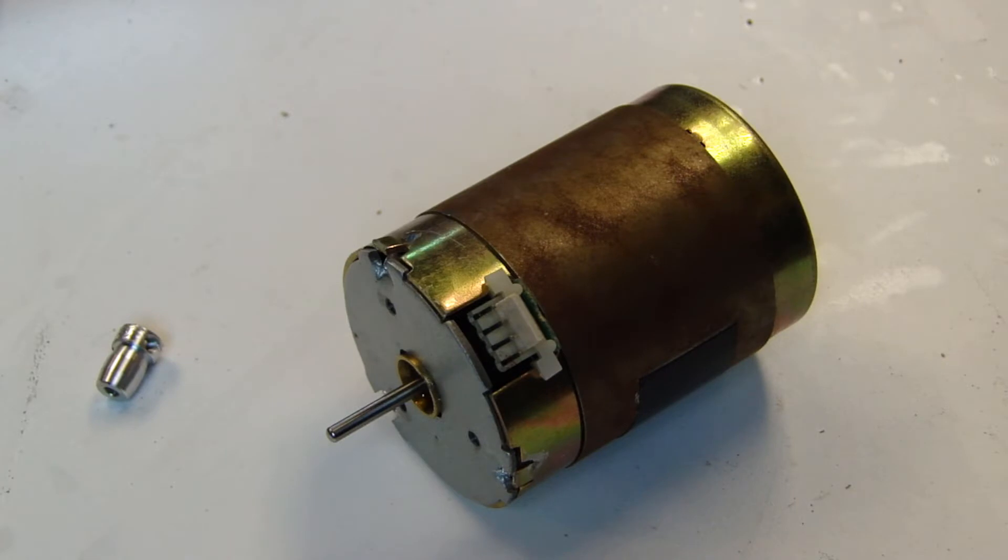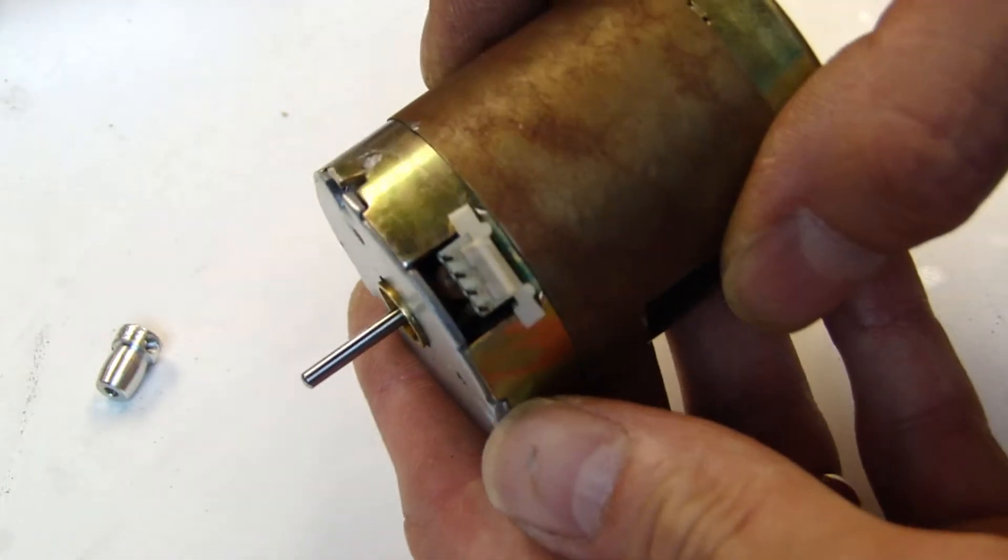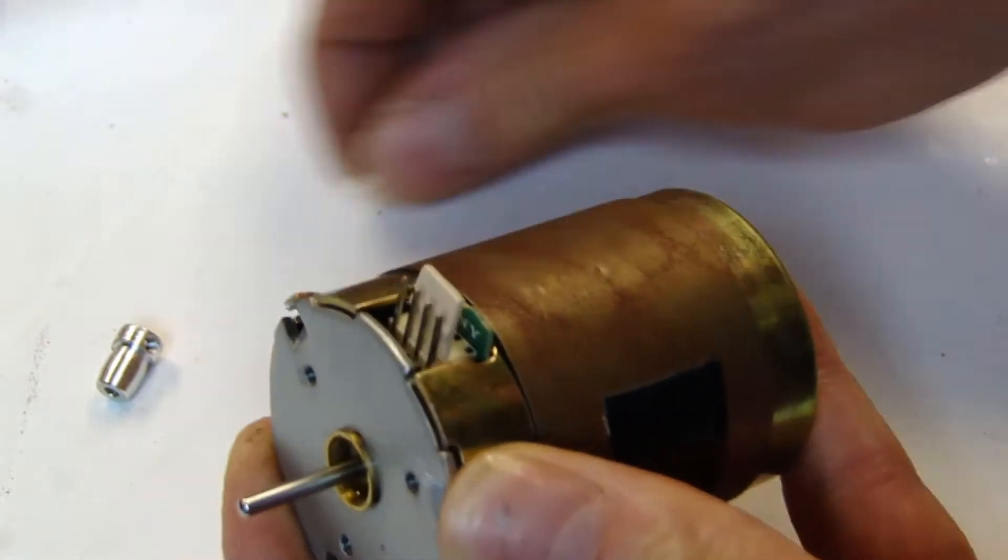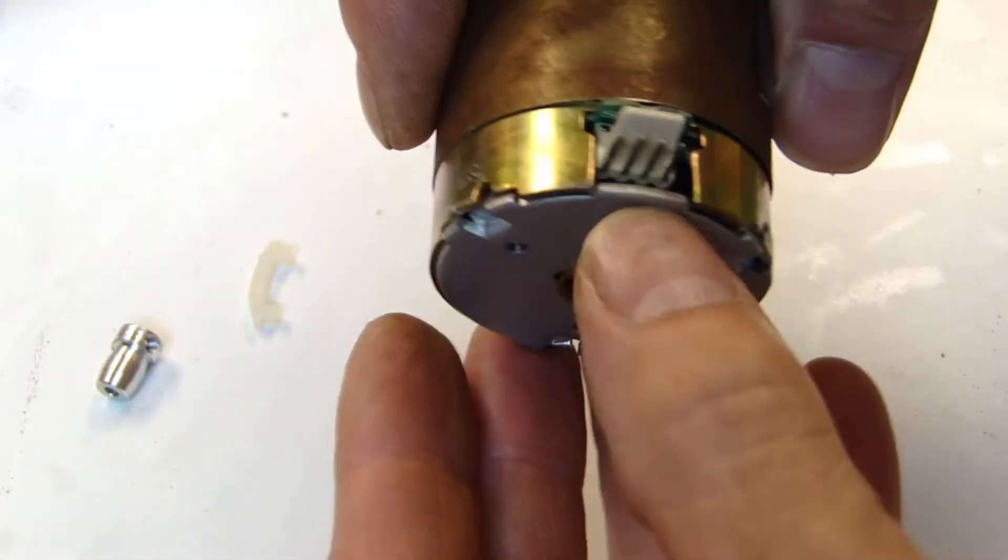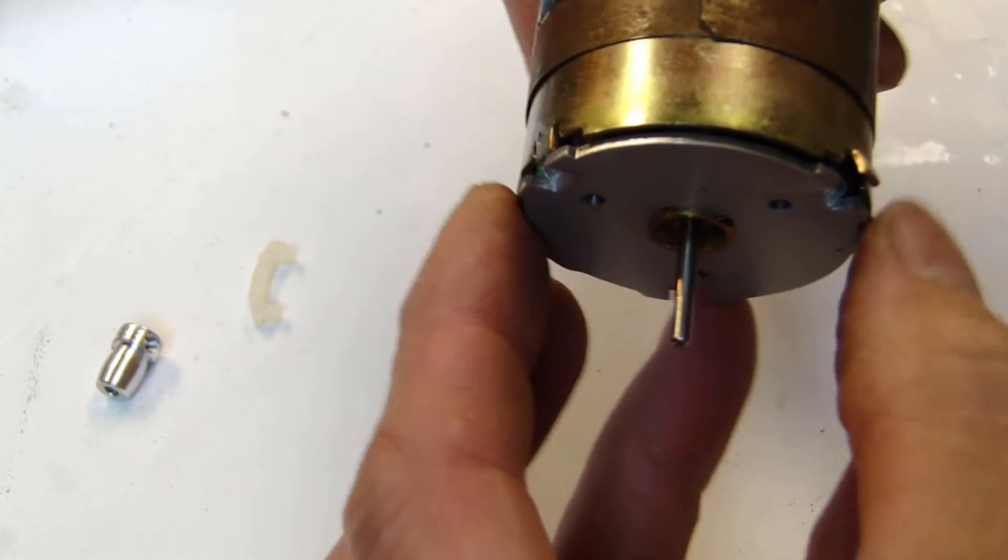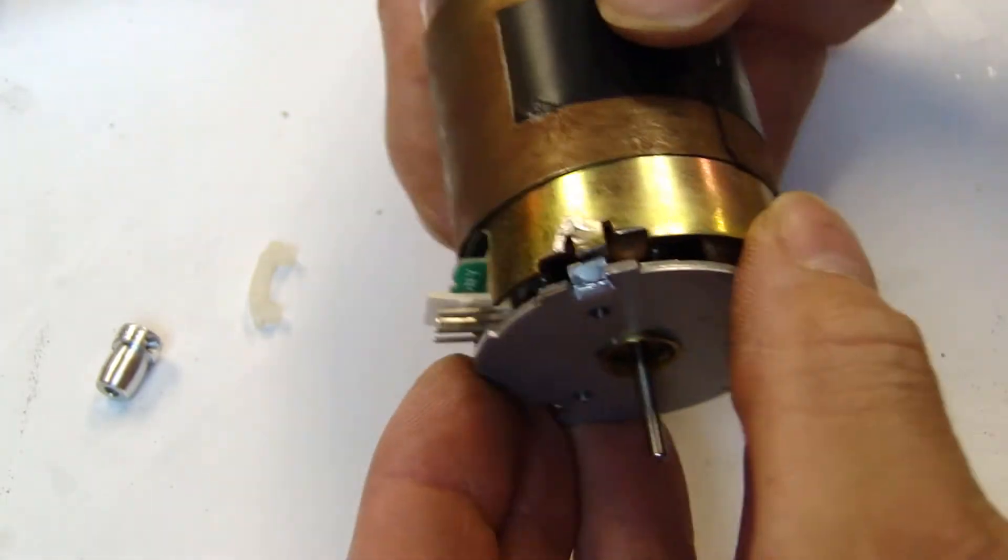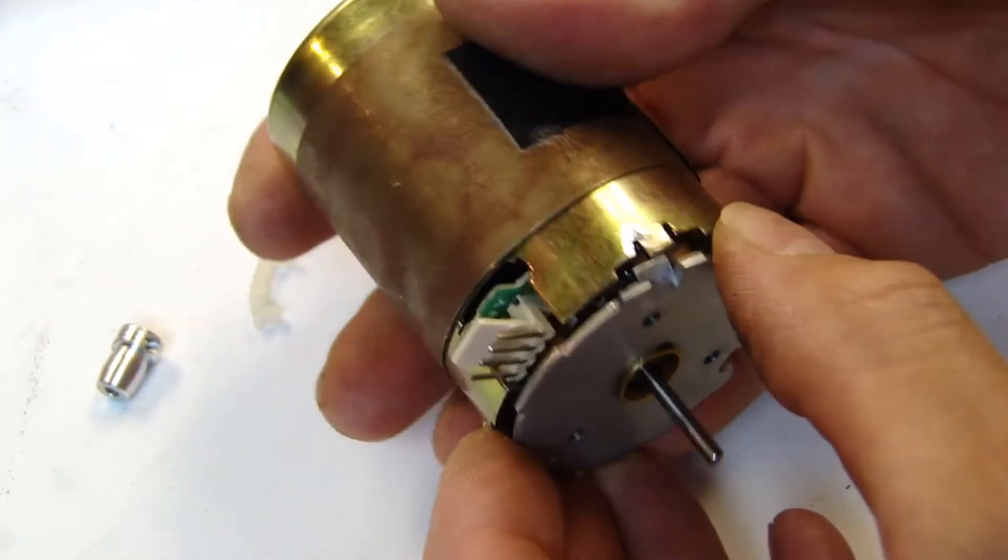Now that the tabs are bent back, it's time to remove the core of the motor from its casing. Gently pull out the little plastic tab and don't forget to take note of its position, as it has to go the correct way around when you reassemble. Then slowly slide out the core from the housing.